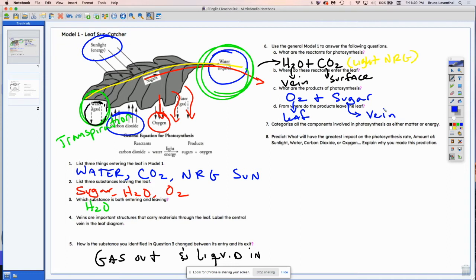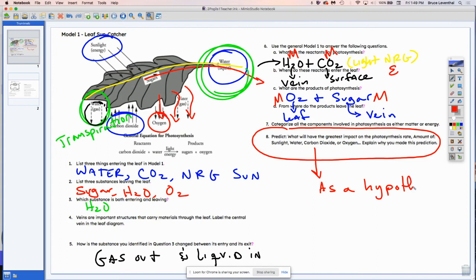Categorize all the components involved in photosynthesis as either matter or energy. And so I'm going to do that in red. I'll use M for matter and E for energy. And then predict what will have the greatest impact on the photosynthetic rate. I am not going to give you the answer to this, but I would like you to write it as a hypothesis. You will be doing a lab later this week in which you'll be able to figure this out.